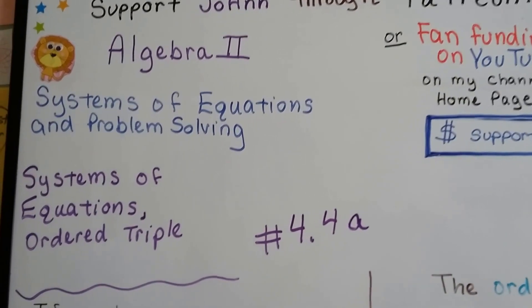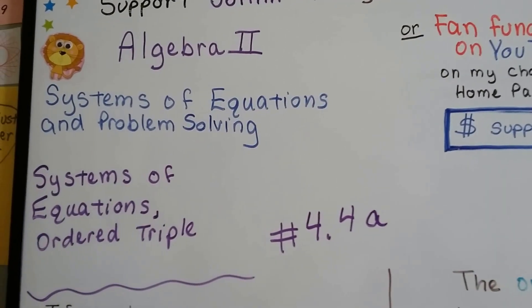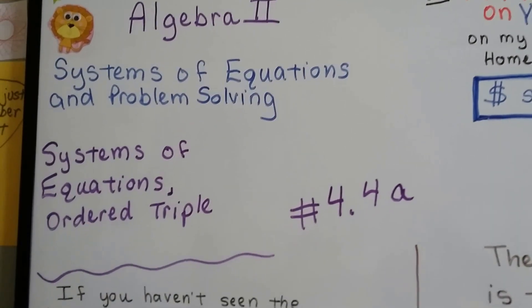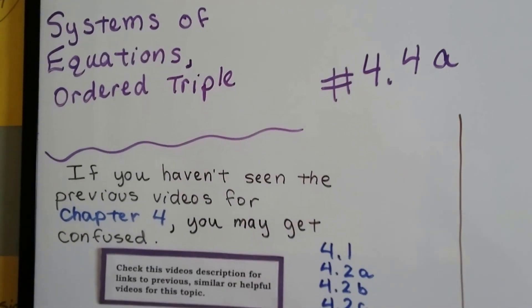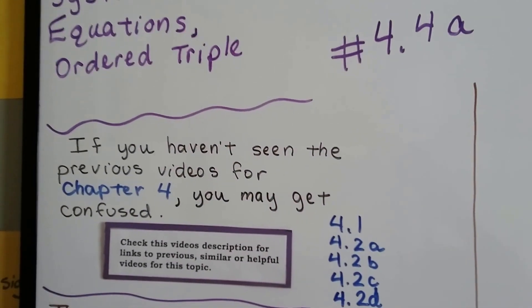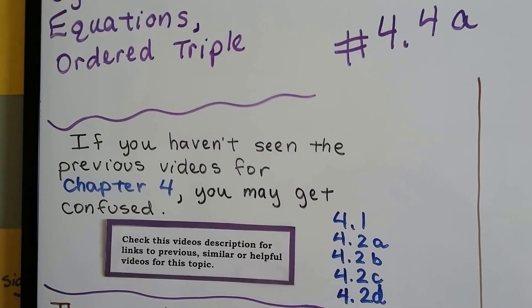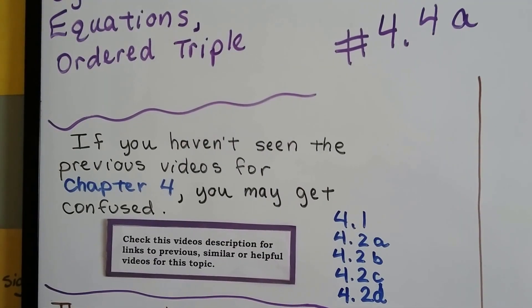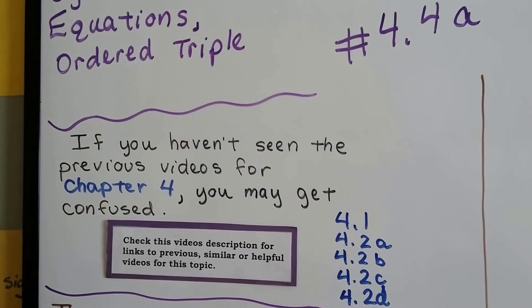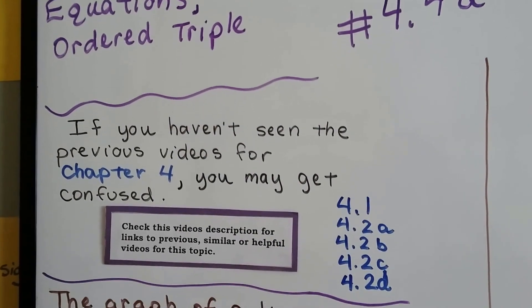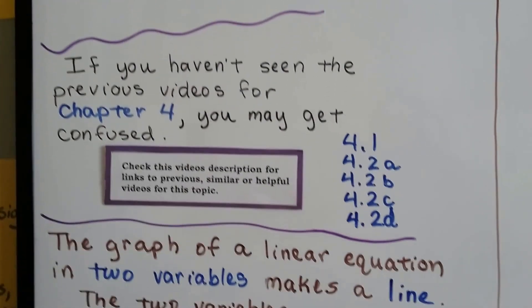Algebra 2, 4.4a: Systems of Equations Ordered Triple. If you haven't seen the previous videos for Chapter 4, you might get confused. I've got links to 4.1 and 4.2abcnd in this video's description so you can watch them.